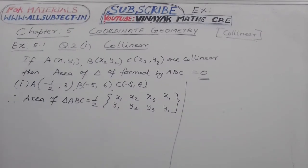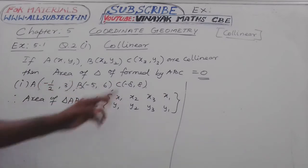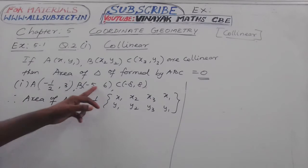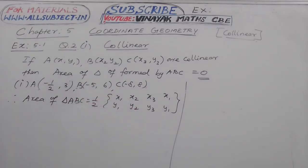Question number 2. Show that the points are collinear. The given points are (-1/2, 3), (-5, 6), and (-8, +8).